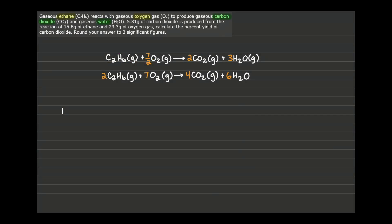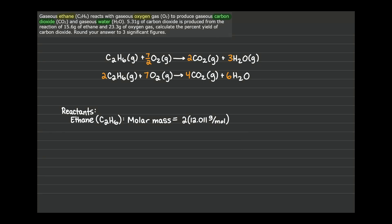To determine the limiting reactant, you'll need to calculate the molar masses of the reactants. That's key because we've been given amounts in grams, but chemical reactions work on mole ratios, not gram ratios. To find the molar mass, multiply the atomic mass of each element by the number of those atoms in the compound. For C2H6, we take 2 × 12.011 g/mol (carbon) plus 6 × 1.008 g/mol (hydrogen), giving a molar mass of 30.070 g/mol for ethane — the mass of one mole of ethane in grams.